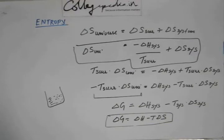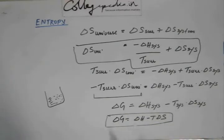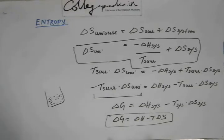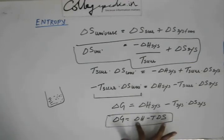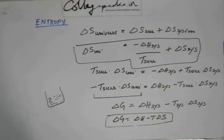We must not forget that this expression ΔG = ΔH − TΔS is valid only if pressure, volume, and temperature all remain constant, and all parameters are of the system. This is convenient because you no longer need to worry about the surroundings. Calculation of ΔG is easy because we have standard data for ΔH and ΔS for most reactions, so finding ΔG at a particular temperature is straightforward.